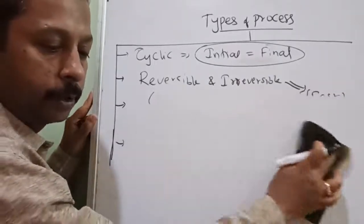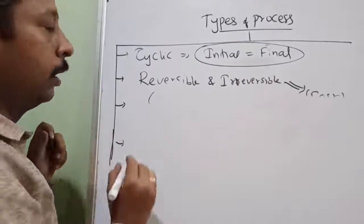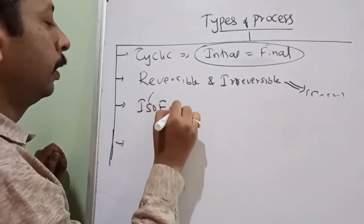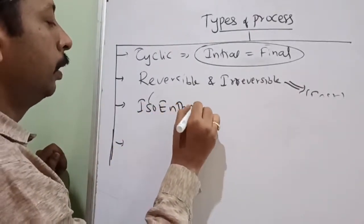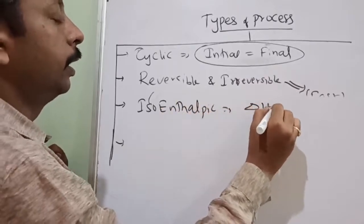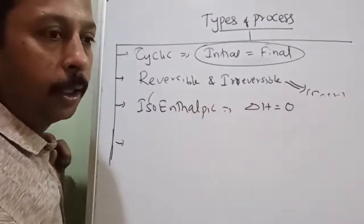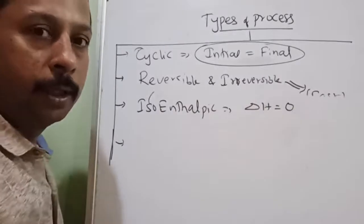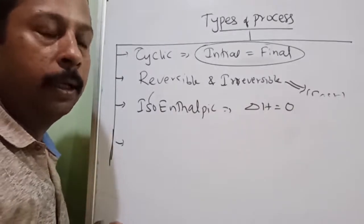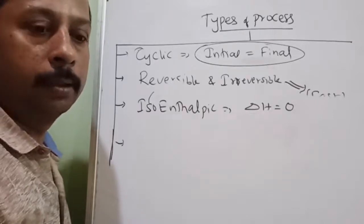There is also the isenthalpic process — where enthalpy change, delta H, is zero. Enthalpy is constant. But if you do not know what enthalpy is at this time, it is difficult to understand right now — we will cover it in detail later.